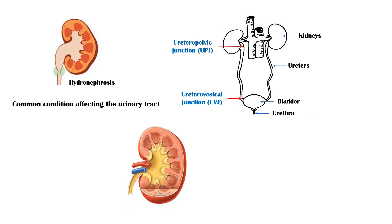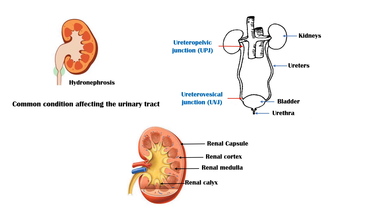In a cross-section of a kidney, the outermost layer is the renal capsule, which is made up of connective tissue. Towards the center, we have the renal cortex, followed by the renal medulla. Urine produced in the nephrons located in the renal cortex and medulla is drained into the renal calyces, then into the renal pelvis, and ultimately into the ureters.